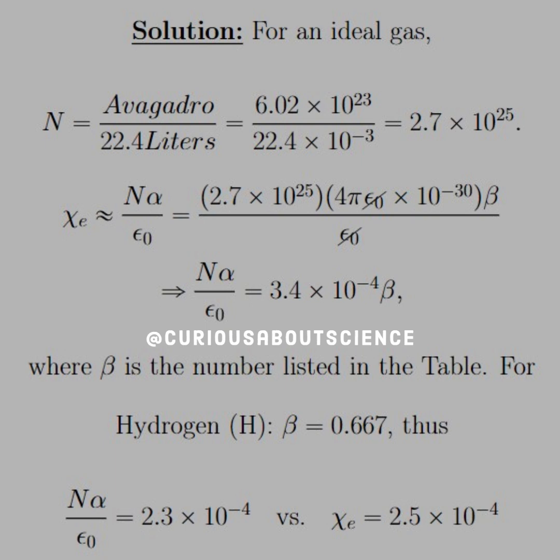Once we have this factor, 3.4 times 10 to the negative 4 times beta, where beta is listed in the table, we multiply them together. For hydrogen, beta is 0.667, thus the approximation yields 2.3 times 10 to the negative 4, versus the actual recorded data of 2.5 times 10 to the negative 4.